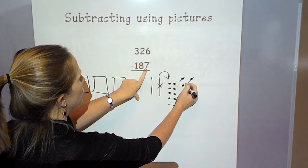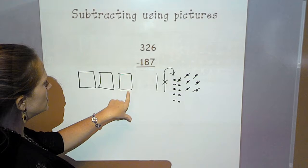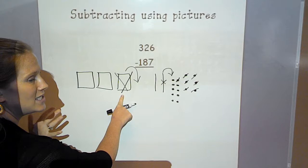So I'm subtracting 187. I took away my 7 ones. Now I'm going to take away my 8 tens. I have one 10 I can take away. So I'm going to have to break apart 100. And I know if I break my 100 apart, I have 10 tens in 100. So I'm going to draw those 10 tens.